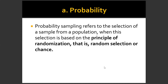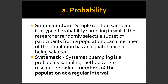First, we discuss probability sampling and non-probability sampling to know more about our sampling techniques. Probability sampling refers to the selection of a sample from a population when this selection is based on the principle of randomization — that is, random selection or chance. Everybody in the population has an equal chance to be selected, and this also eliminates bias since we don't know who will participate; we are just picking them randomly.